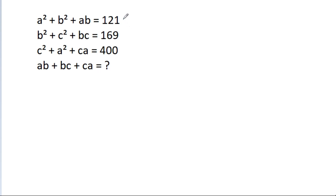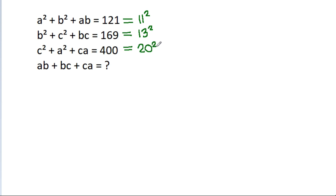So 121 is 11 squared, 169 is 13 squared, and 400 is 20 squared.